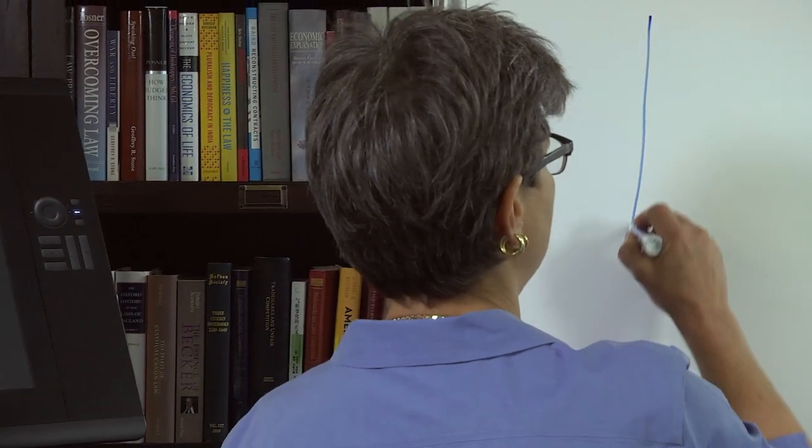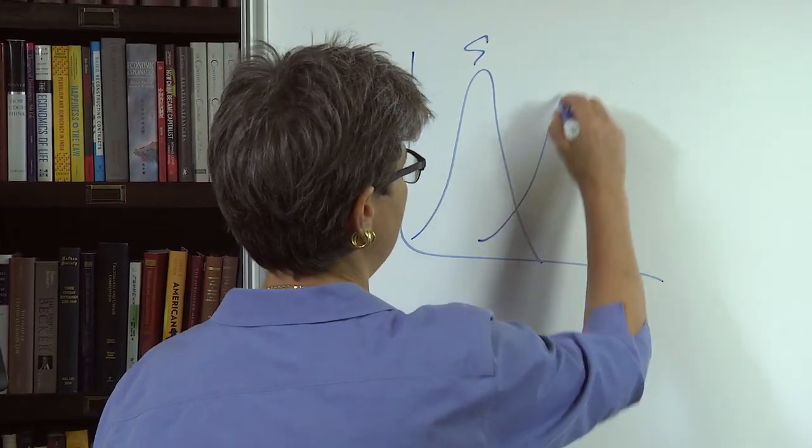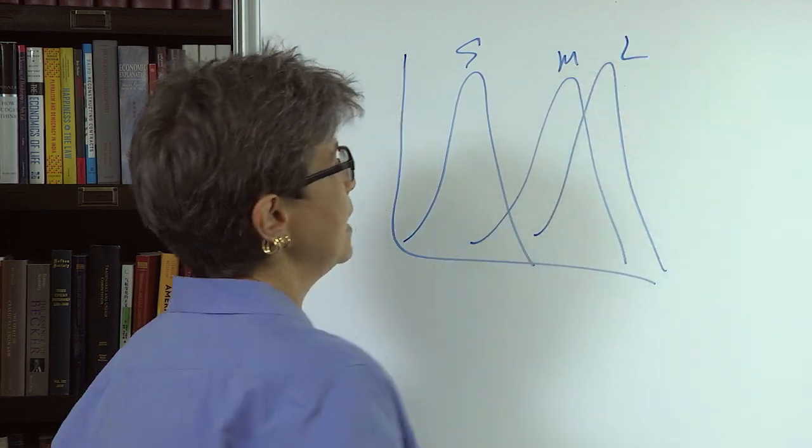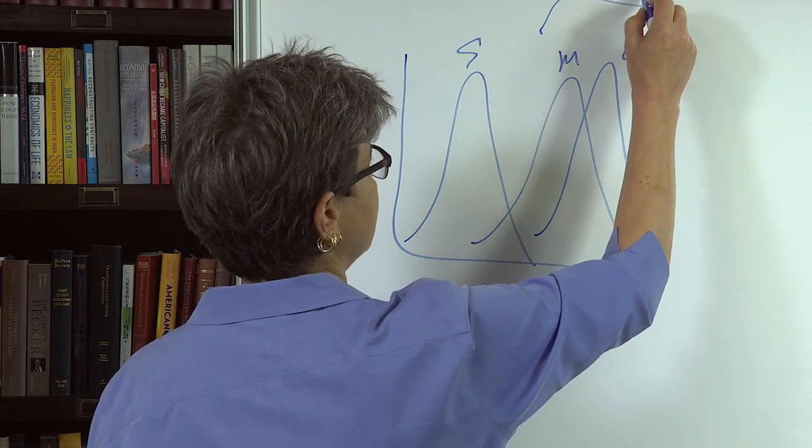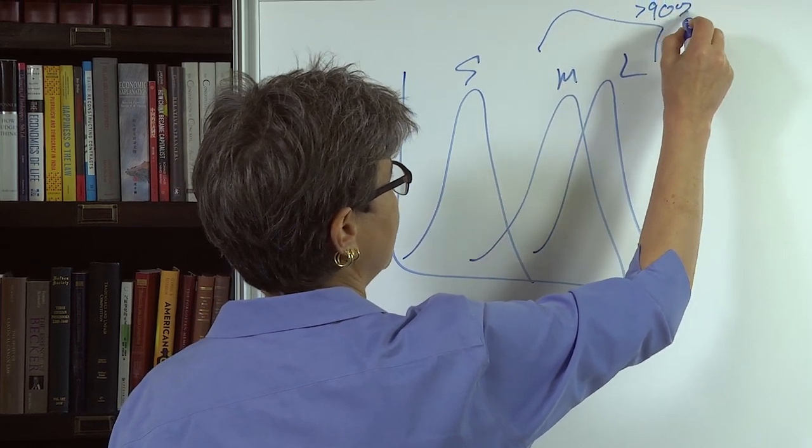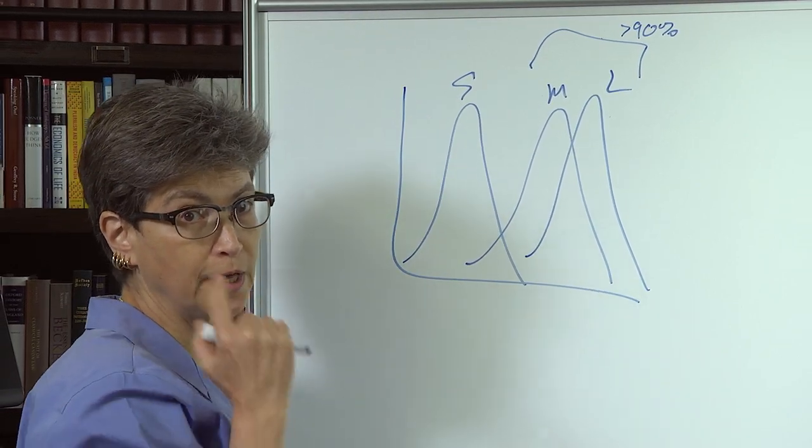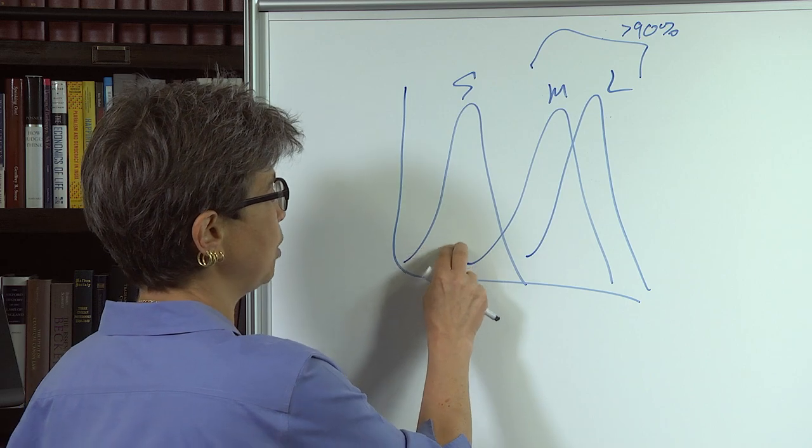We're talking about the cones. Remember that there's an S cone here, and then there's an M and an L. And there are a lot more of these. These are about 90% of all the photoreceptors, and this is a very small proportion of all the cones are the S. It's not 30-30-30 at all. So these are a small proportion.